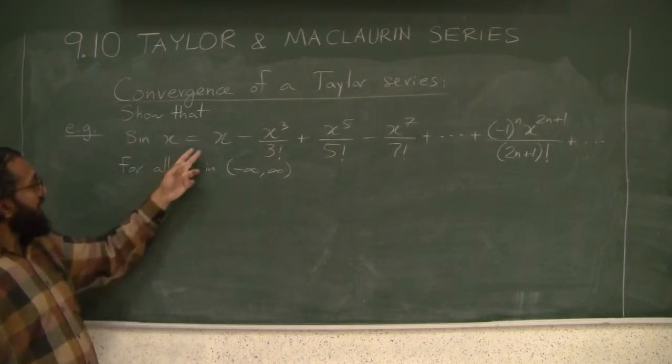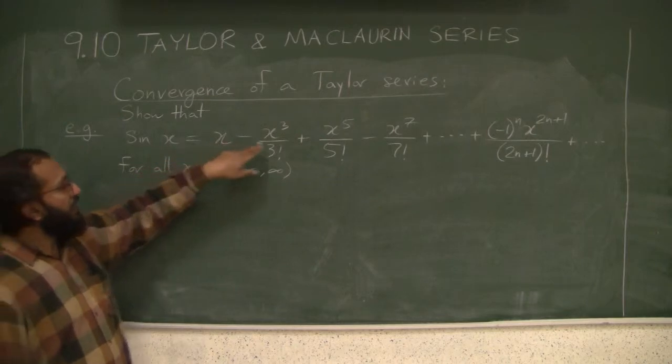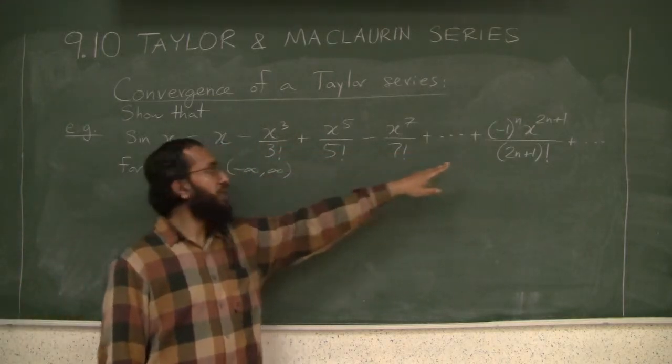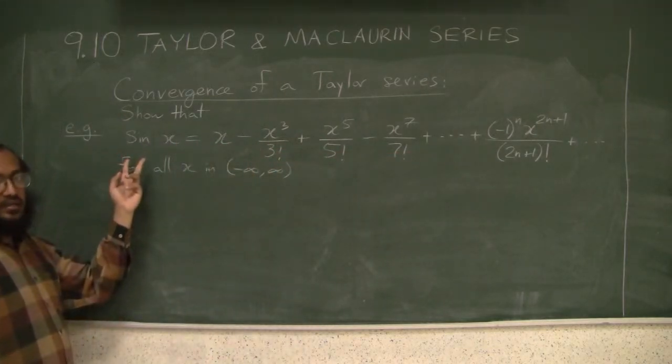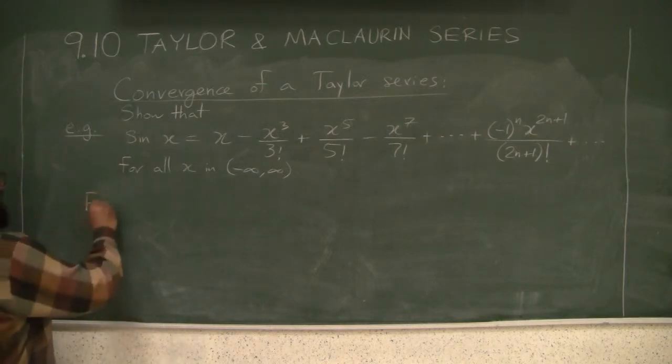We want to show that indeed if I take any x - x equals 5, 15, 1 billion - I plug them in here into this series, it actually ends at equaling sine of that value. So what are we going to do? Let's look at the error theorem.